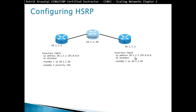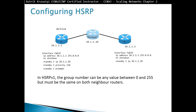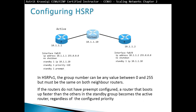Configuring 'standby 1 preempt' means that if router A fails and router B becomes active, when router A comes back online it will take over again as the active router. In HSRP version 1, group numbers can range from 0 to 255 but must be the same on both neighbor routers. If preempt is not configured, the router that boots up faster than the other in the standby group becomes the active router, regardless of the configured priority.